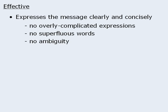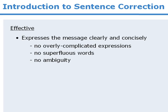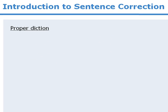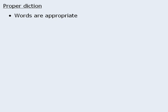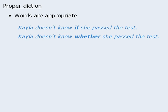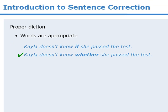It also means that the correct answer will be free of any ambiguity — we'll discuss what all of this means in future lessons. When it comes to proper diction, we're referring to the choice and use of certain words. On the GMAT, the correct answer choice will contain words that are appropriate for the context. For example: 'Kayla doesn't know if she passed the test' versus 'Kayla doesn't know whether she passed the test.' In this context, the correct word is 'whether.' We'll learn more about appropriate word choices in future lessons.